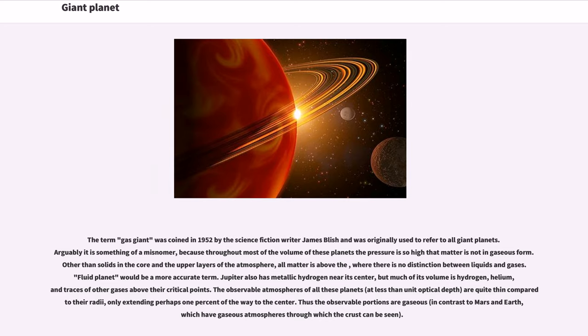Jupiter also has metallic hydrogen near its center, but much of its volume is hydrogen, helium, and traces of other gases above their critical points. The observable atmospheres of all these planets, at less than unit optical depth, are quite thin compared to their radii, only extending perhaps one percent of the way to the center.